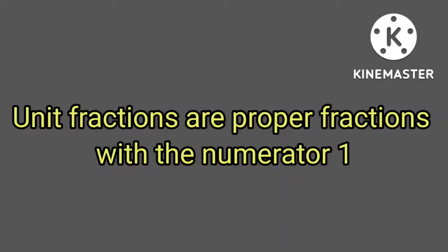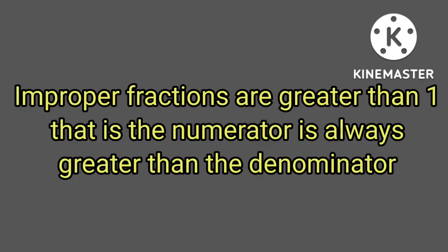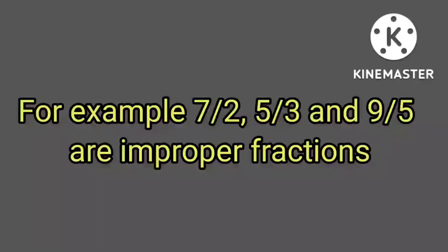Unit fractions are proper fractions with the numerator 1. Improper fractions are greater than 1. That is, the numerator is always greater than the denominator. For example, 7/2, 5/3, and 9/5 are improper fractions.